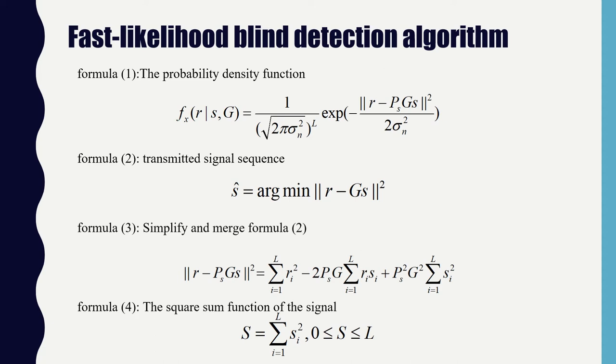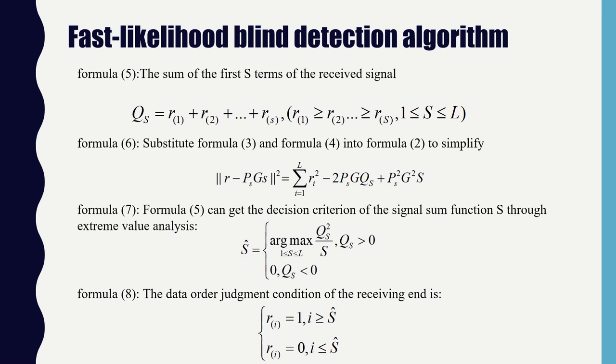For transmission, the characteristics of the underwater visible light channel make it very important to select an appropriate signal detection algorithm. Blind likelihood detection means that the receiver processes signals under the condition that the mathematical model and statistical parameters of the channel are not known, and can complete accurate estimation of the channel and detection of the signal.